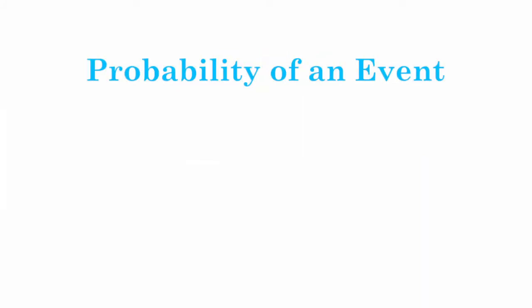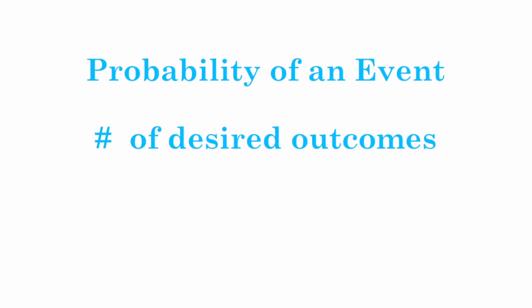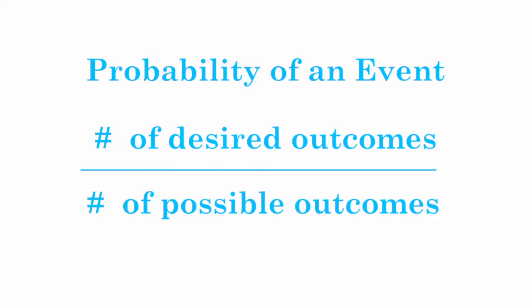Therefore, the probability that a certain event will occur is the number of desired outcomes over the number of possible outcomes.